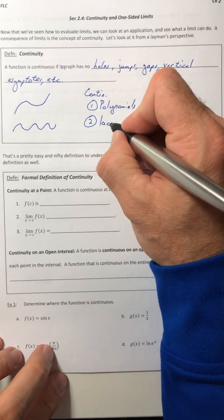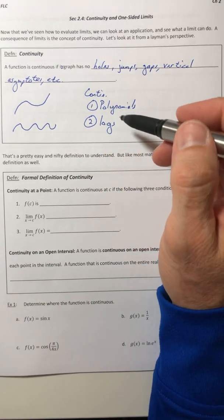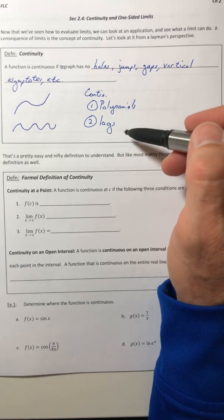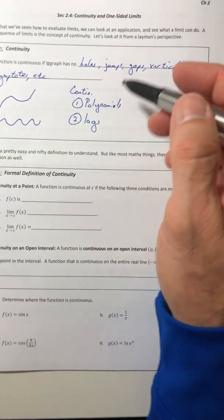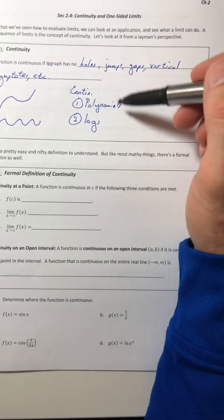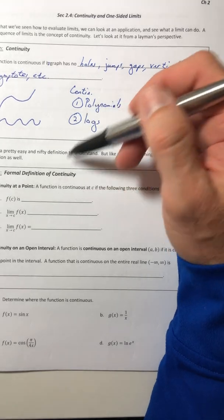Another one would be logarithms, including the natural log. They have a restricted domain, but they don't have a vertical asymptote in the middle of it. It's on the edge. So the curve itself doesn't have anything that breaks it.